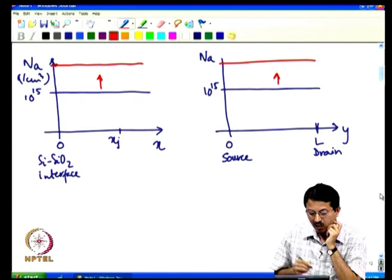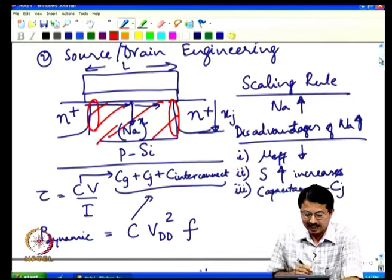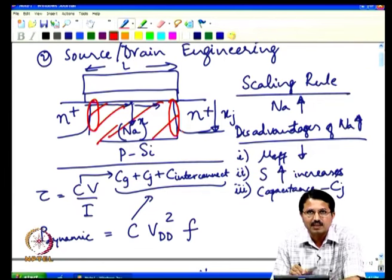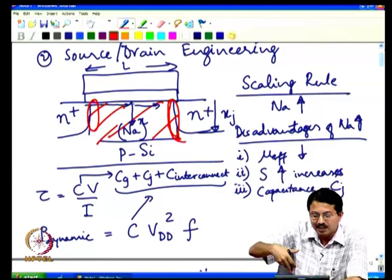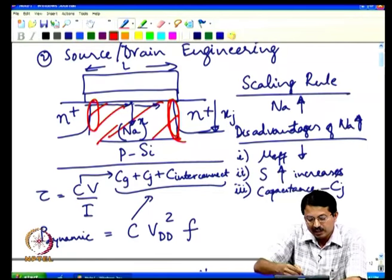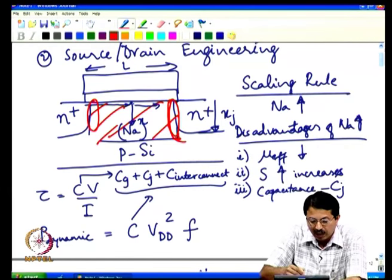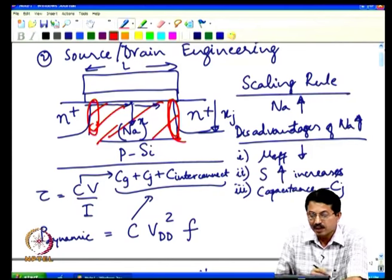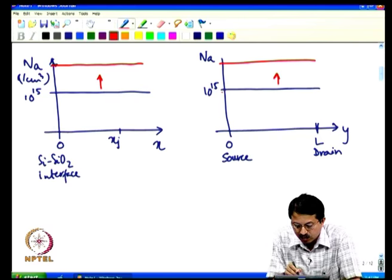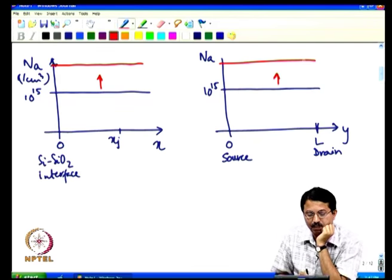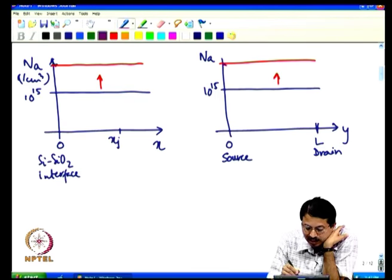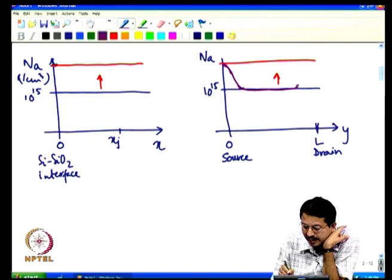This is what is called pocket halos. We introduce very highly doped pockets that go around the source and drain junctions — hence the name halo, because it looks like a halo around the junction. There is one pocket near the source and one near the drain. The doping profile along y is high near source, drops to a low value in the middle of the channel, and rises again near the drain.